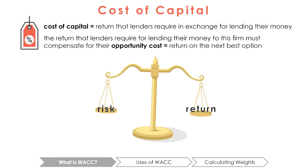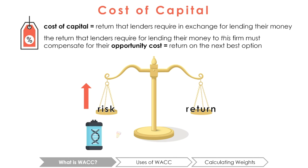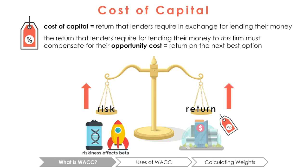Different firms may be riskier than others for various reasons. Maybe they're in a risky industry, like biotech, or a small startup that has not yet established their market position. Because of this, the different riskiness in firms will affect the rate of return that their lenders require. Thus, each firm will have its own cost of capital.